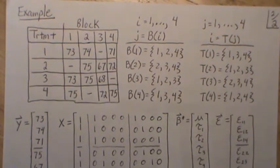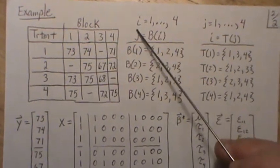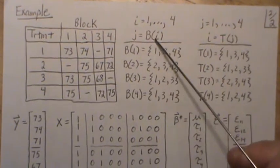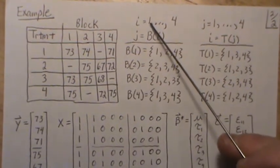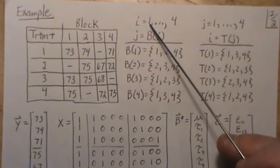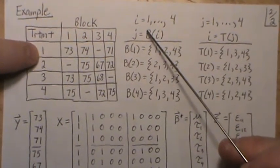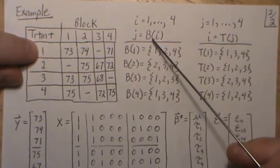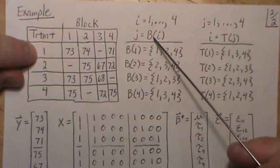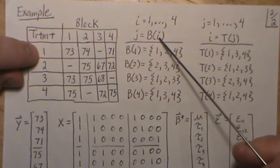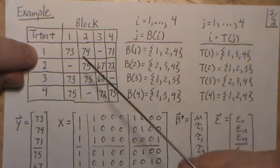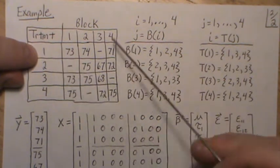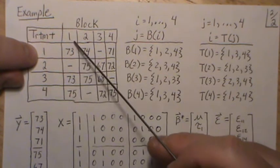Here's the notation: i equals one to four, j equals B(i). So let's do i equals one. That means treatment one, B(i)—the block indices for treatment one. Notice treatment one (i equals one) is in blocks one, two, and four, and that's what's here.